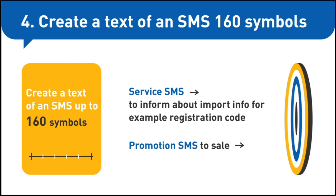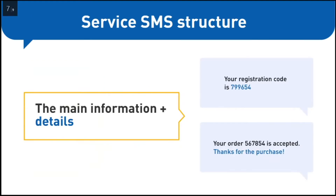The typical structure for service messages is the following: write what kind of information you are sending — registration code, code for signing in, etc. — and then the data itself. You can also thank a customer for their purchase if you are sending details about the order. Here are some examples: 'Your registration code is 799654.' 'Your order 567854 is accepted. Thanks for the purchase.'